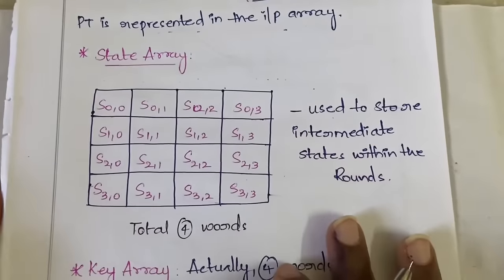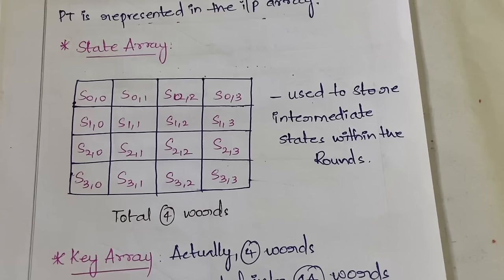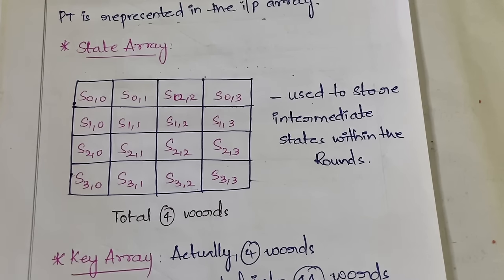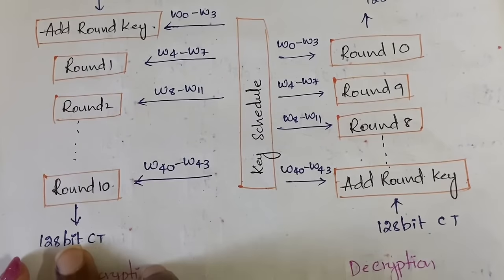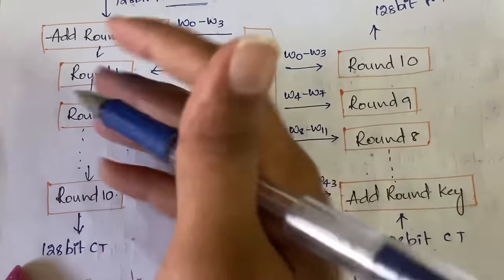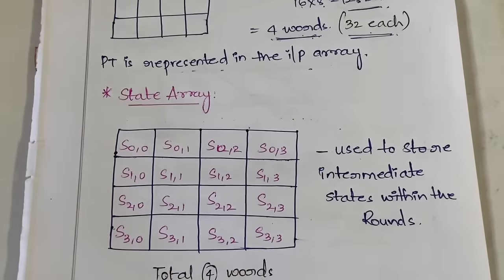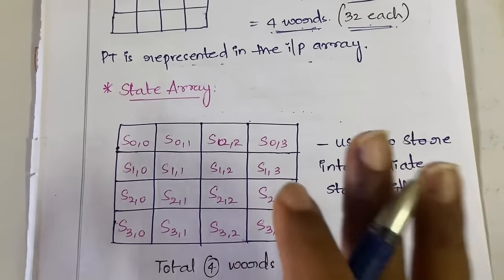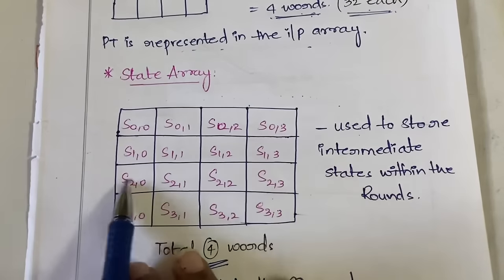The state array is used to store all the intermediate states. What do we mean by intermediate states? When we are performing rounds — and as mentioned, we have 10 rounds — each round also has three to four additional steps. Whenever operations are performed in those steps, or between rounds, the results are stored in the state array. Here you give plain text, perform 10 rounds, and get ciphertext — whatever intermediate results arise are stored in the state array in the form of four words.